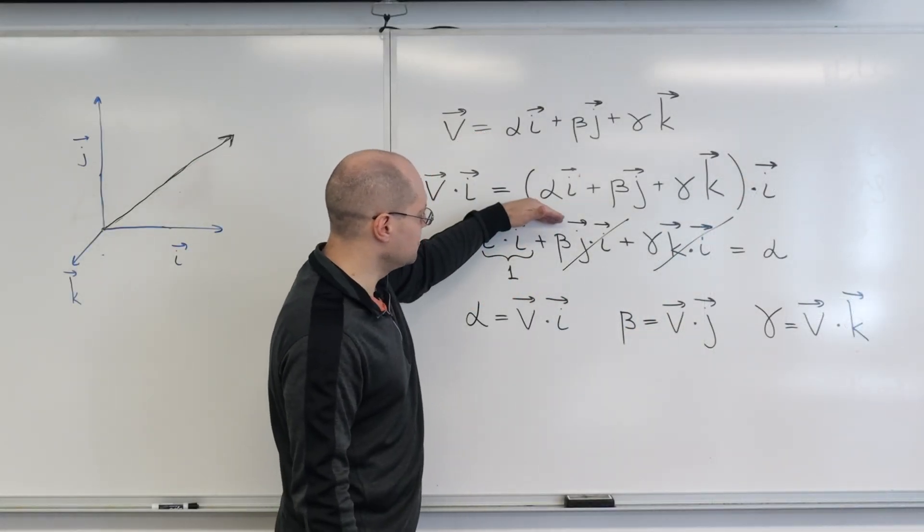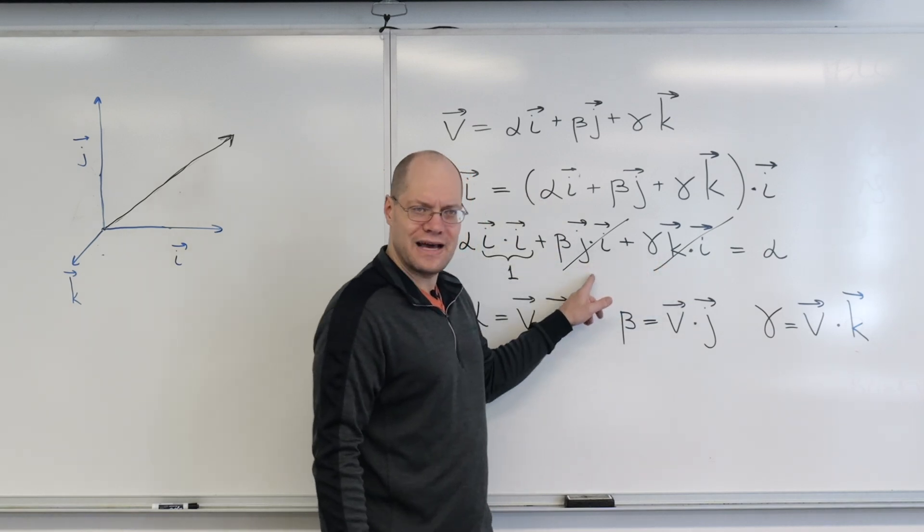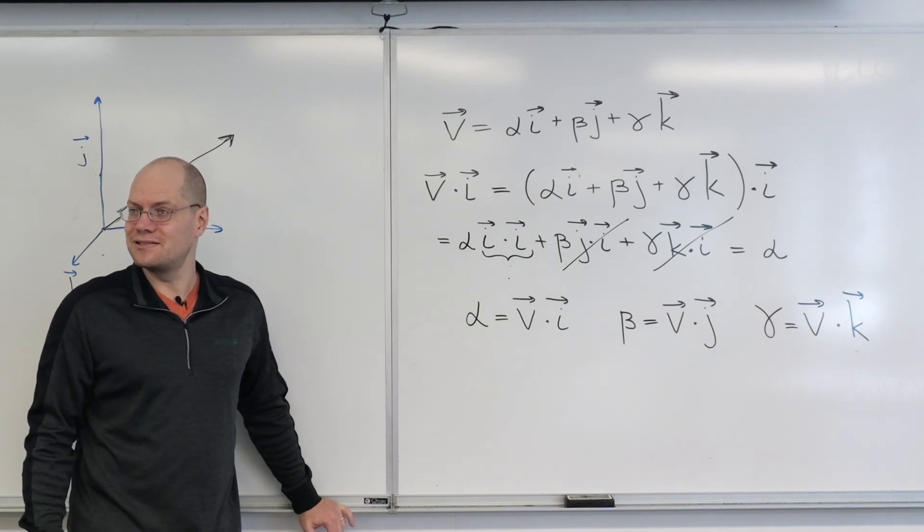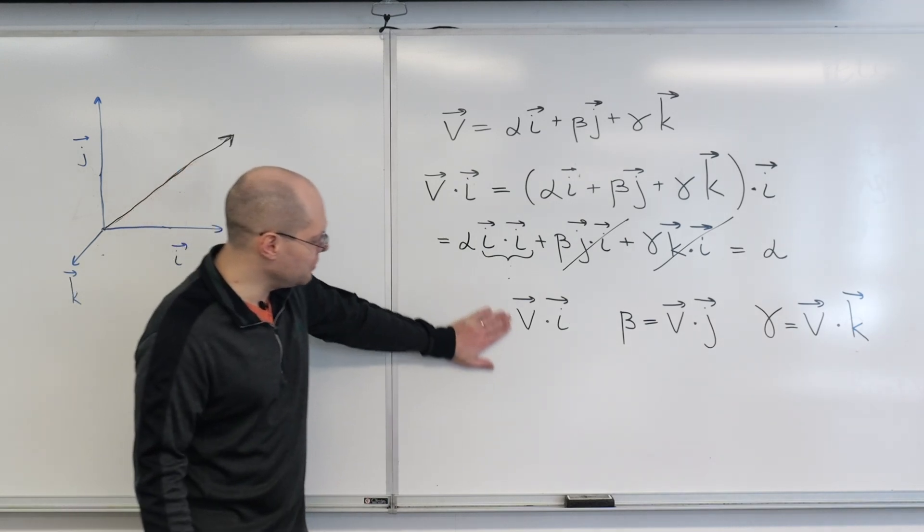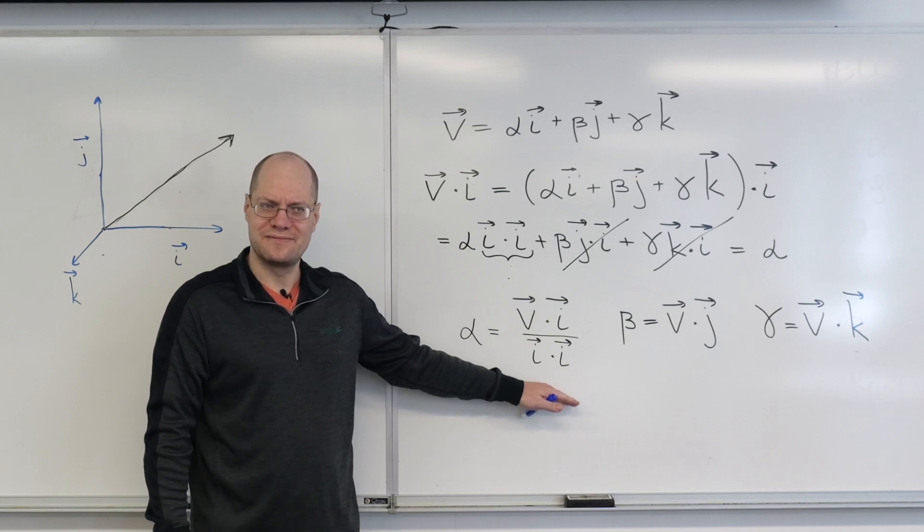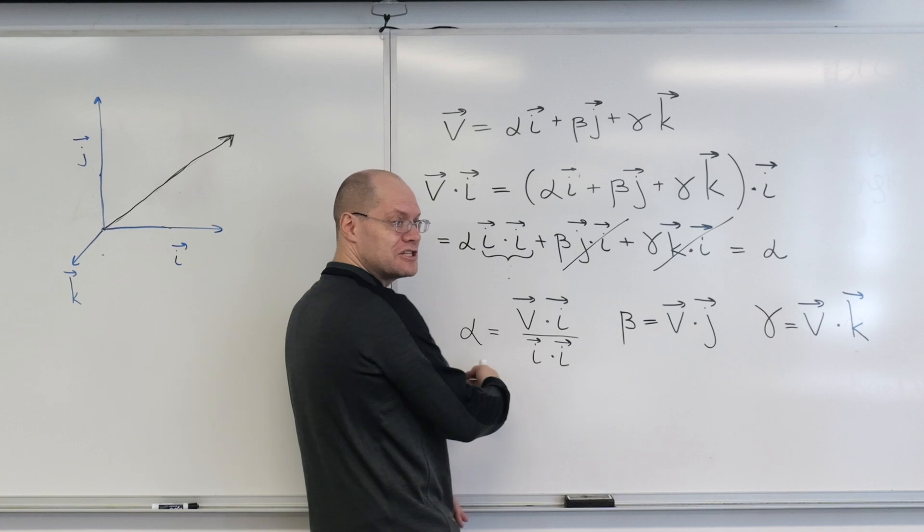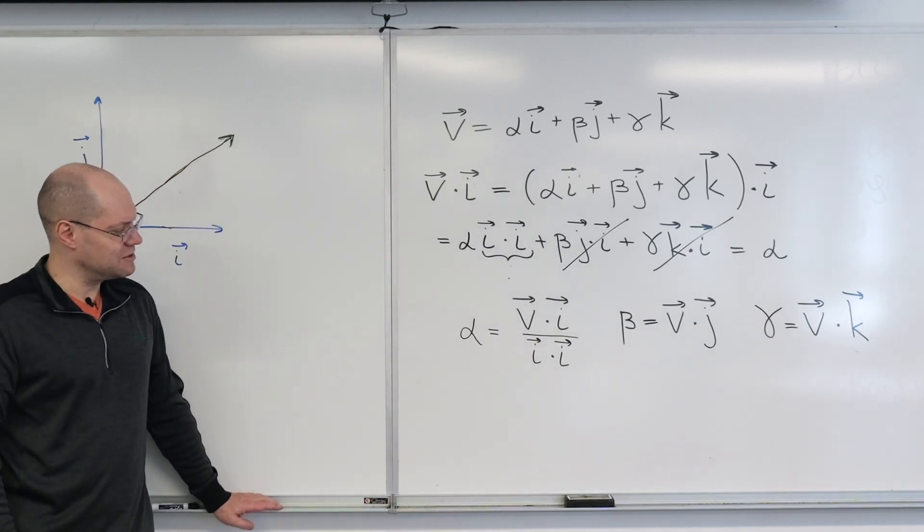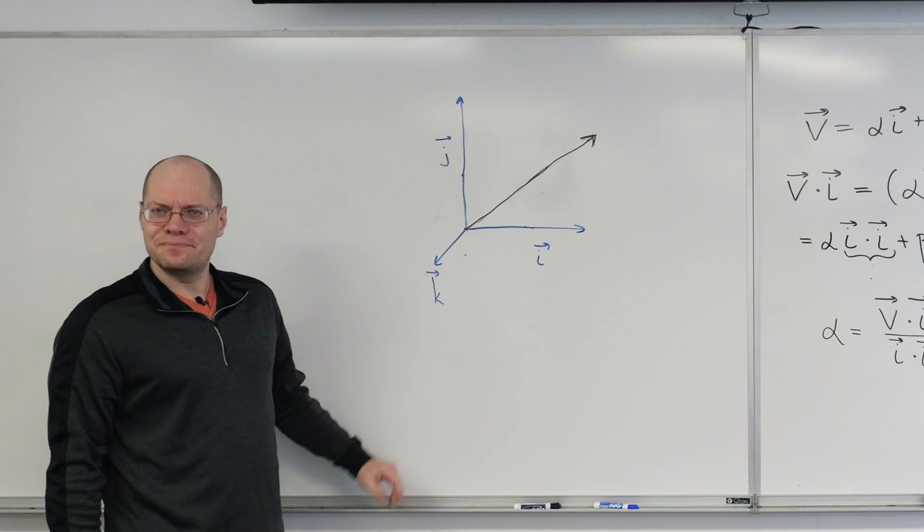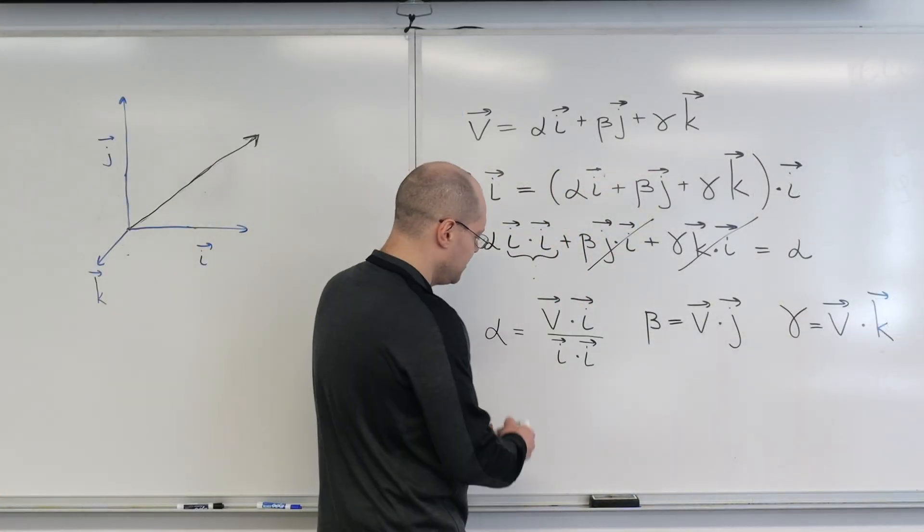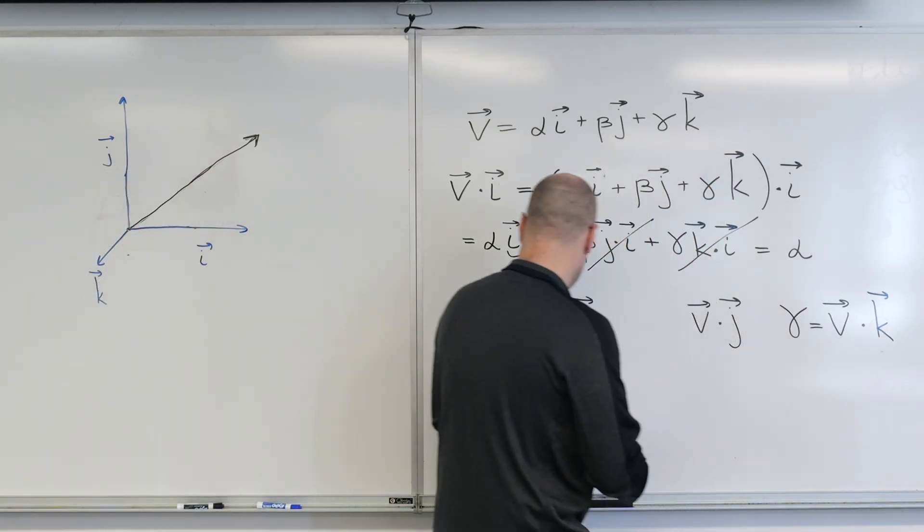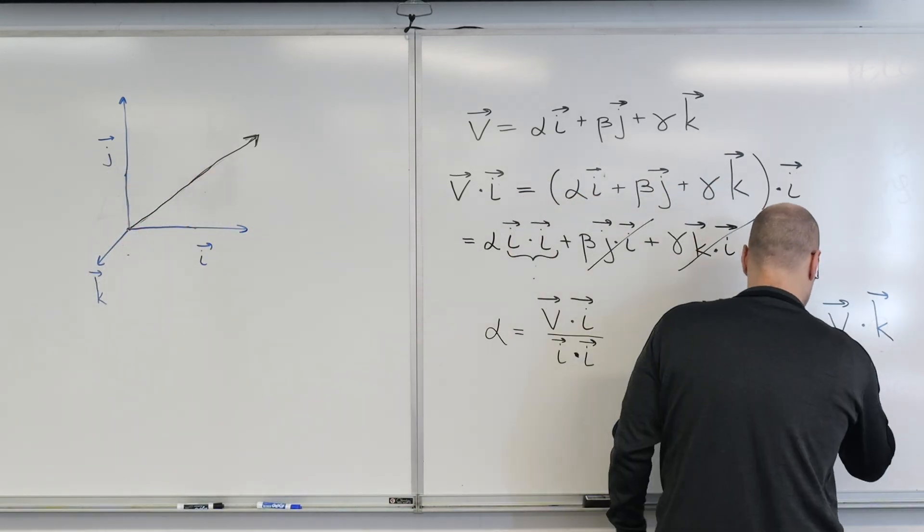Well, this still works. This is still valid. The distributive law is still valid. These still vanish. The only part that doesn't work is that i dotted with i is no longer one. It's whatever number it is. It's the length of that vector squared. So all you have to do to correct it is divide by it. A very familiar combination from doing projections, right? All we need to do is multiply by i, and that's the projection of v onto the vector i. So yeah, it has to do with orthogonal projections. So it's like the combination that we so frequently see in the Gram-Schmidt orthogonalization. So same thing for beta and gamma.